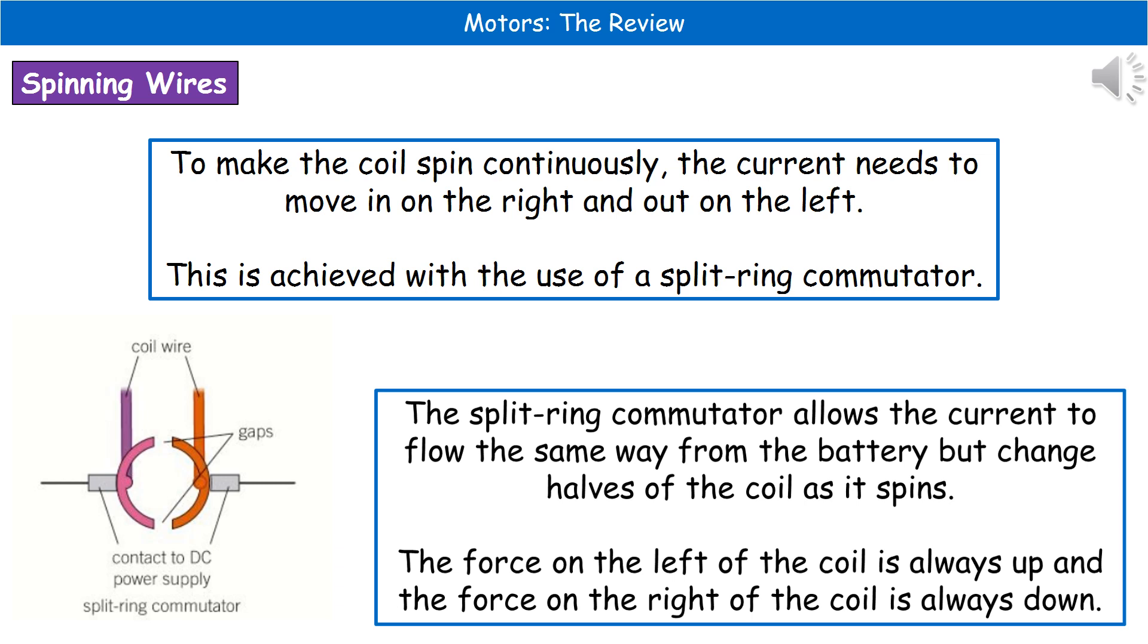In order for the coil to spin continuously, what we've got to make sure of is that the current has to move in on the right and out on the left. So it's got to go in on one side and out on the other side, because if we didn't have that, what would happen is that it just kind of turns so far, but then the current is going to change. So that would mean the force would change, so it would never spin.